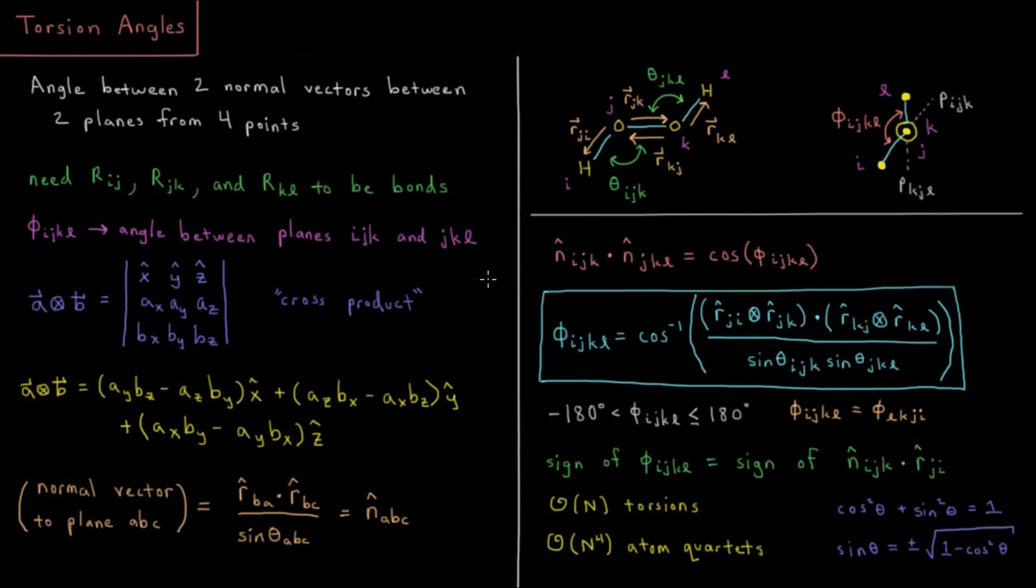In order to do this, we're going to introduce the concept of a cross product of two vectors. So A cross B is going to be another vector which is perpendicular to both vector A and vector B.